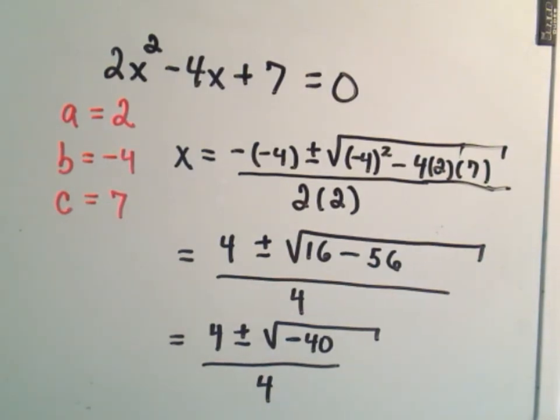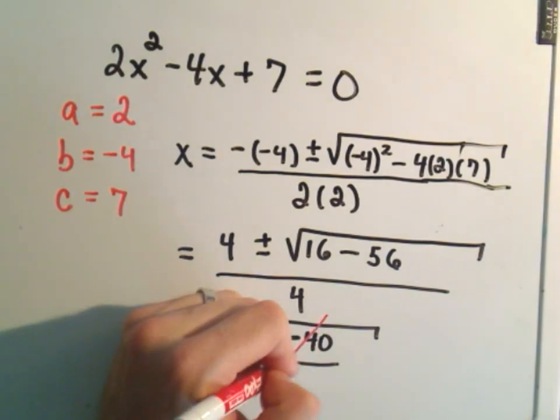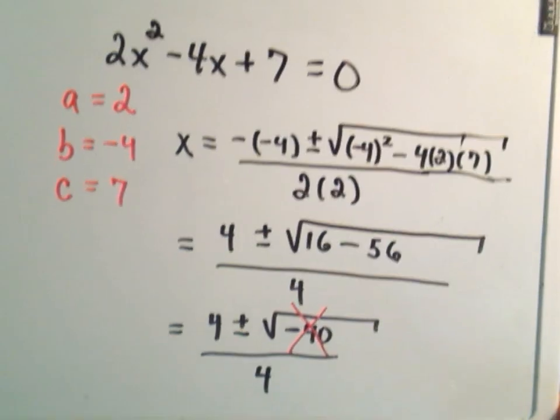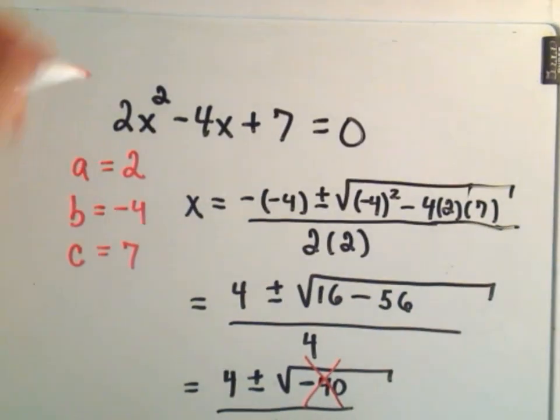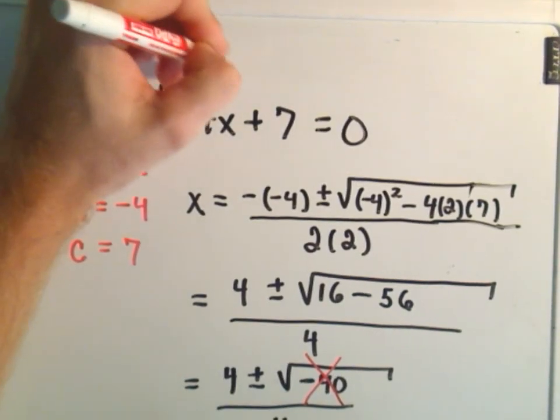You could be solving quadratic equations where you're allowed to use complex numbers. Typically, in an algebra class, people want real number solutions. There's no real number that you can square and get -40, so there's no solution. We can't take square roots of negative numbers. If you get a negative number under the radical, it means there are no real solutions to the original equation.